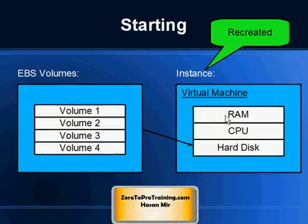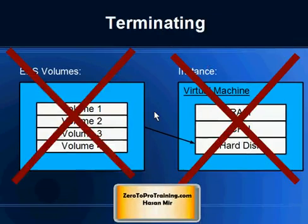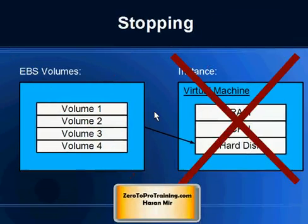Starting an instance does not mean your virtual machine was in a suspended state and you simply turn it on. In fact, the virtual machine is created on the fly when you start the instance, and the data on the hard disk is supplied by the EBS volumes holding your data — so you get the same state you wanted on the virtual machine's hard disk.